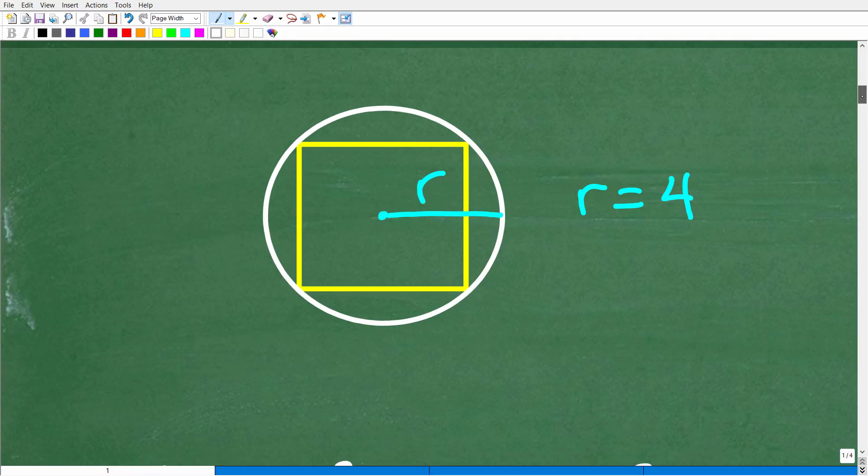Let's get into it. This is not that difficult. You need to know some basic concepts about circles, squares, and triangles. Here is the problem: we have this square inscribed inside of this circle. That means the corners of the square are touching the circle. What do we know about squares? The sides are equal, and the angles are 90 degrees.